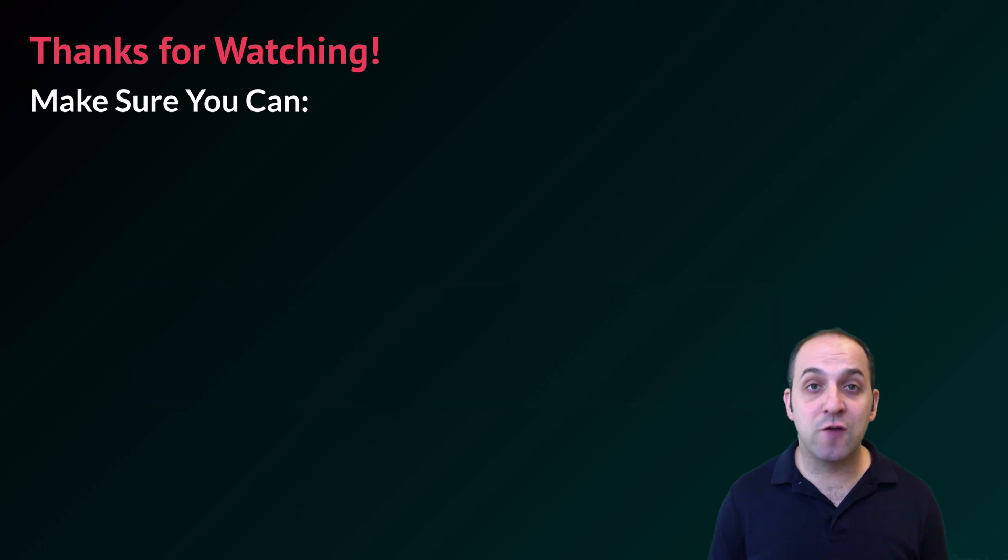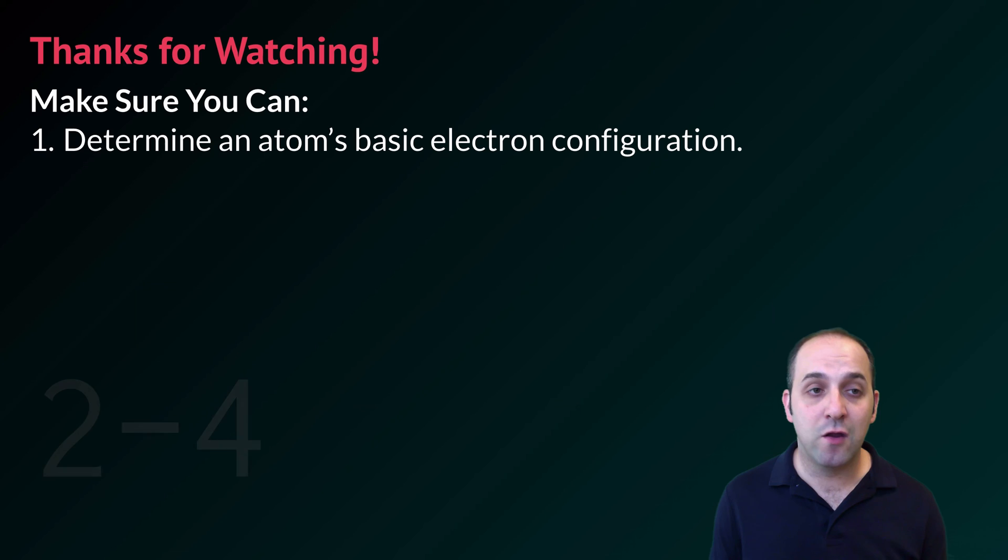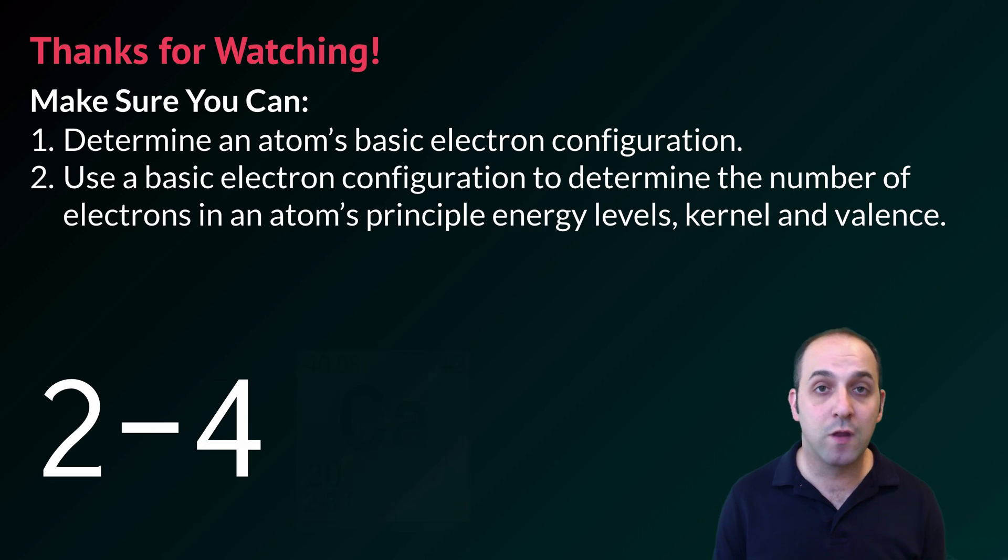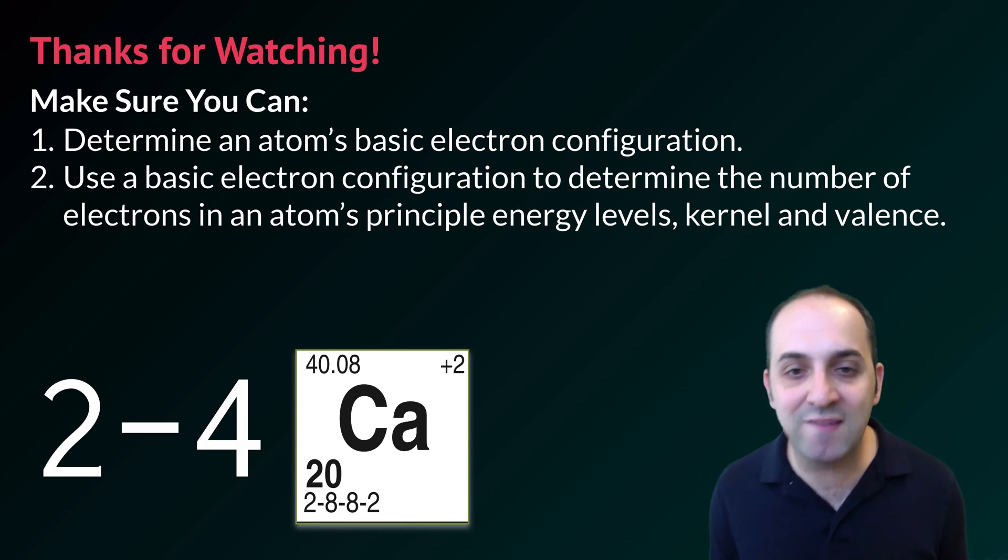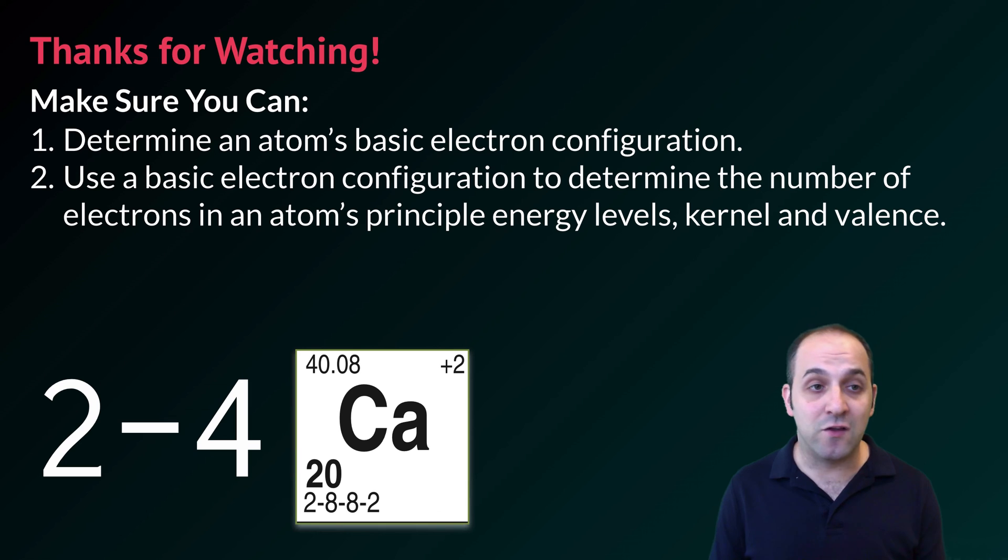Thanks so much for watching our discussion of basic electron configurations. Make sure you can do the following things here at the end. Make sure that you can determine an atom's basic electron configuration if you're given the identity of that atom. It's as simple as going to the periodic table. Also make sure that you can use a basic electron configuration to determine the number of electrons in an atom's principal energy levels, in its kernel, and in its valence.